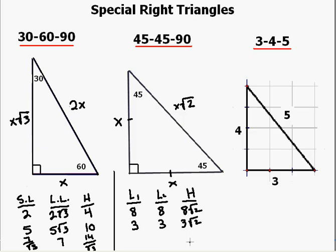Suppose the hypotenuse has a length of 7. Then each of the legs would have lengths of 7 divided by the square root of 2. That is the 45-45-90 relationship.